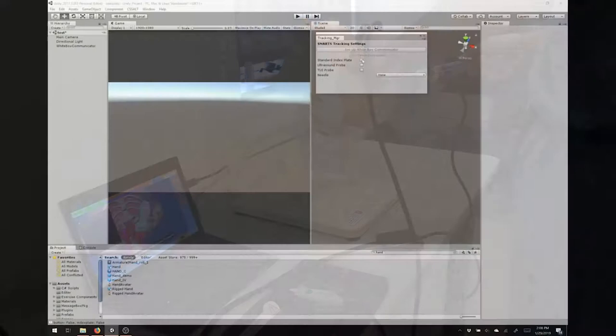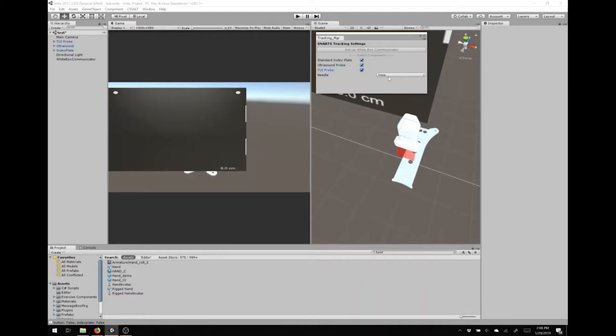To facilitate software development, a software development kit was made to be easily integrated with the modular stand and a set of handheld tracked tools, such as a needle and ultrasound probe. This kit is a code library developed in the Unity game engine and consists of features that facilitate developing procedural simulations.